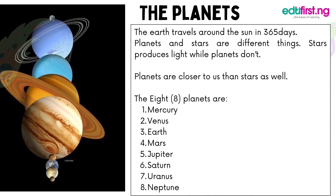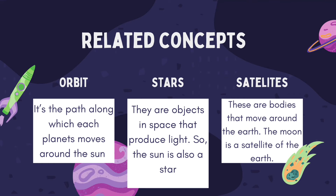Other related concepts to the solar system include orbit — the path along which each planet moves around the sun. Stars are objects in space that produce light, so the sun is also a star. A satellite is a body that moves around the earth; the moon is a satellite of the earth.